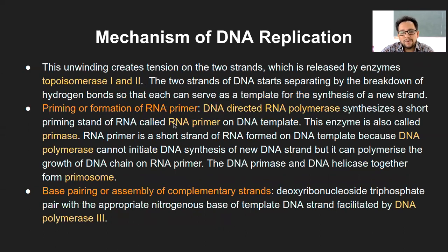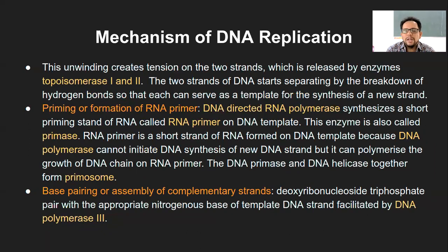The next stage was the formation of RNA primer on the DNA strand, which is done by RNA polymerase which is DNA-directed. Using the primase enzyme, the RNA primer will be formed, on which the DNA template will be formed because of the DNA polymerase. DNA polymerase cannot initiate DNA synthesis on its own — it will act only if there is an RNA primer formed. It cannot start DNA replication on its own. That was the function of the primase and the RNA primer.